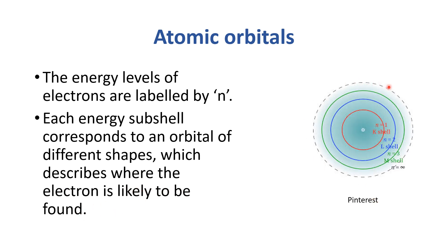Bohr has given us a concept of shells. These shells are further classified into subshells, and subshells correspond to an orbital. An orbital basically tells us where an electron is likely to be found. They are of different shapes — some are spherical, some are dumbbell, and some are complicated shapes. So atomic orbitals basically describe where an electron is likely to be found.